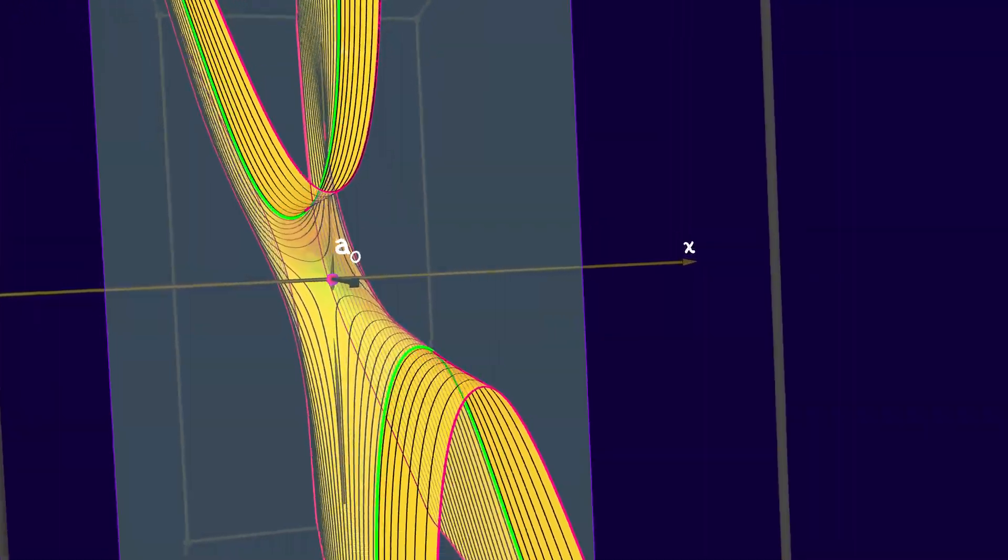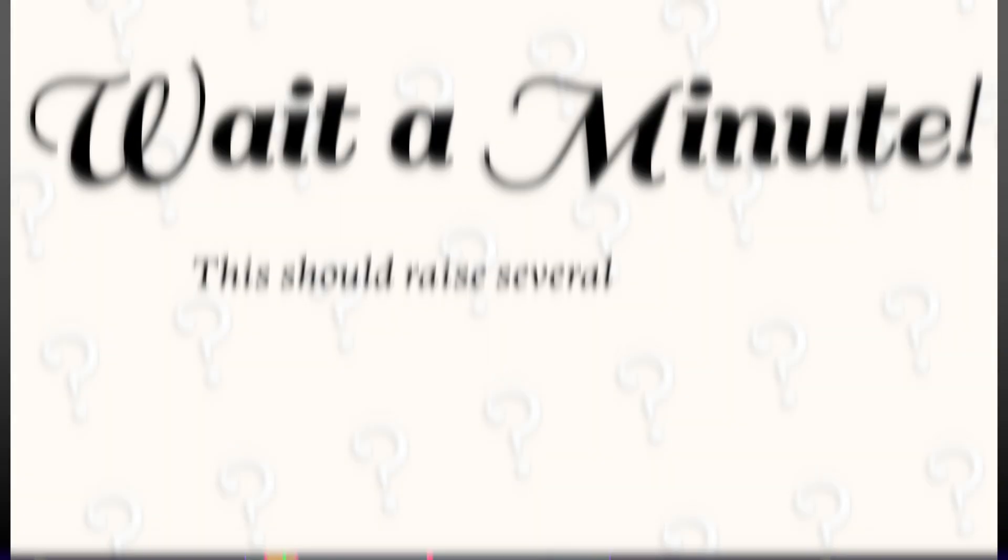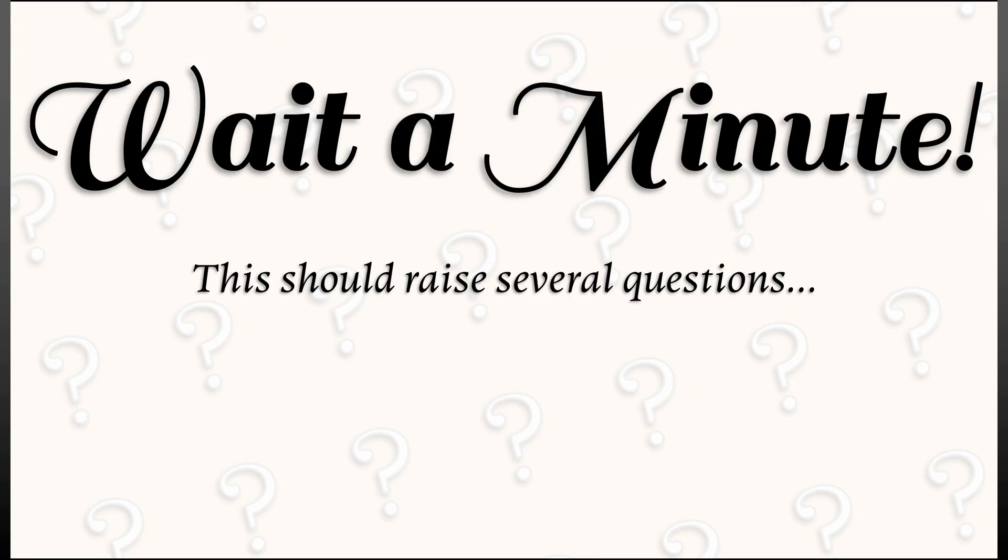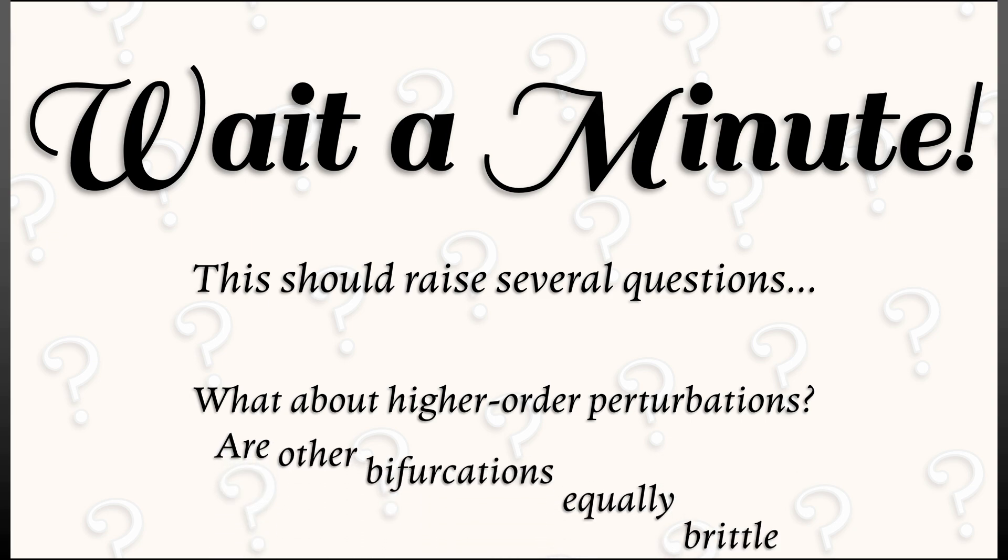Now, this is very cool, but this should raise a bunch of questions. First of all, we haven't talked about what happens with higher order terms in the perturbation. One can argue that those don't really matter. It's not going to be a problem. But what about the other bifurcations? What about a pitchfork? Is that equally brittle? Is there a way to quantify degeneracy?